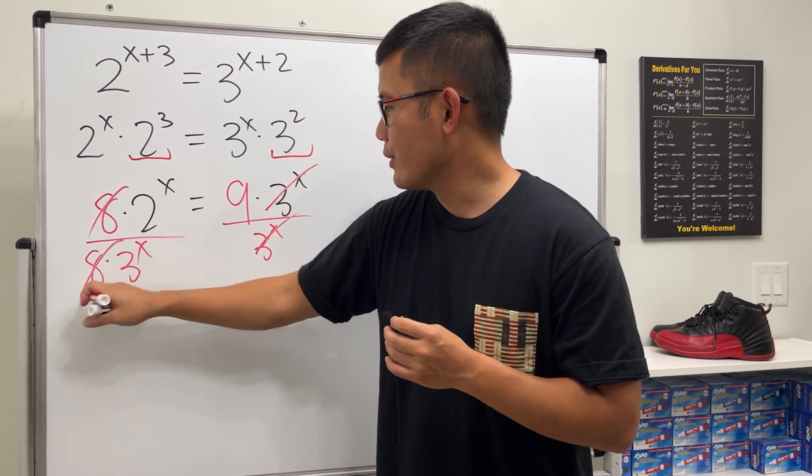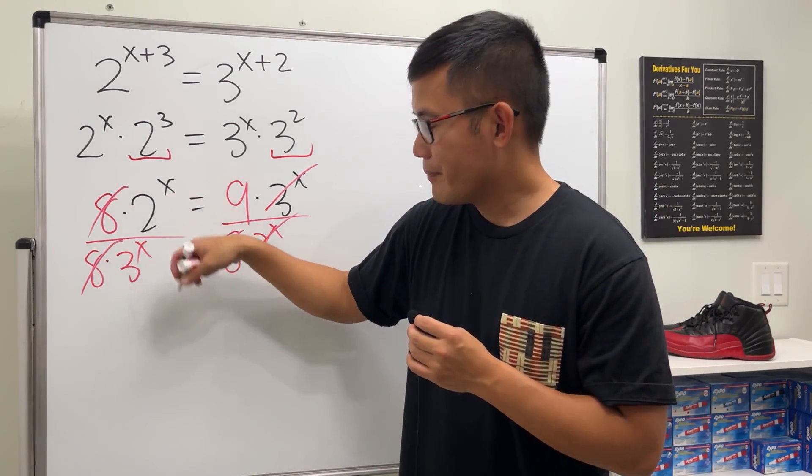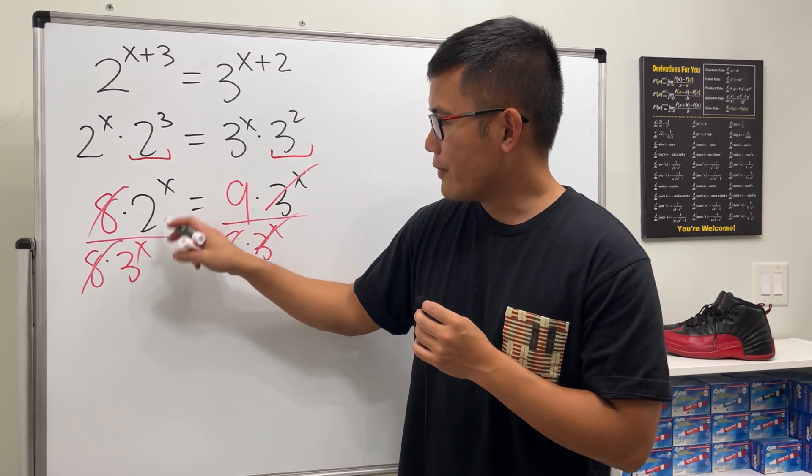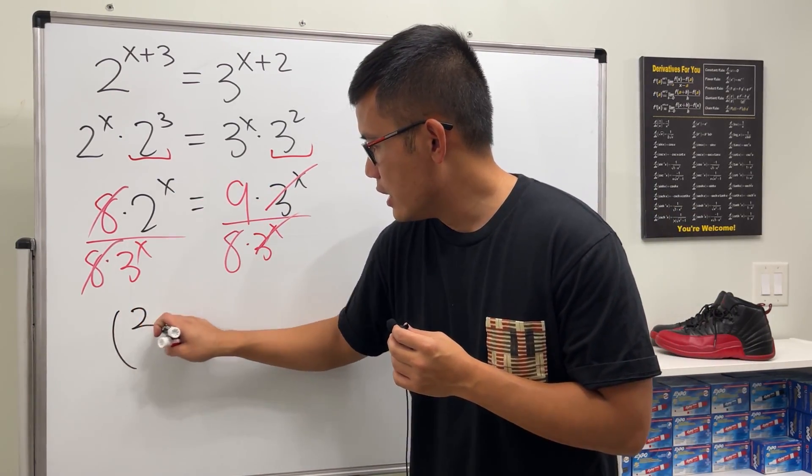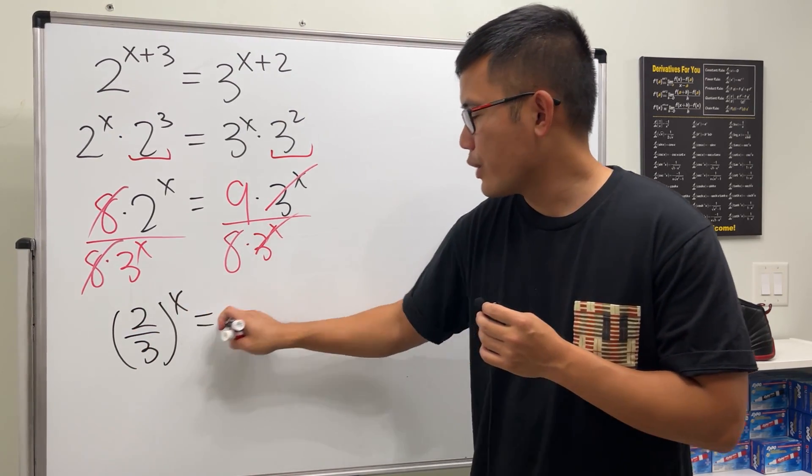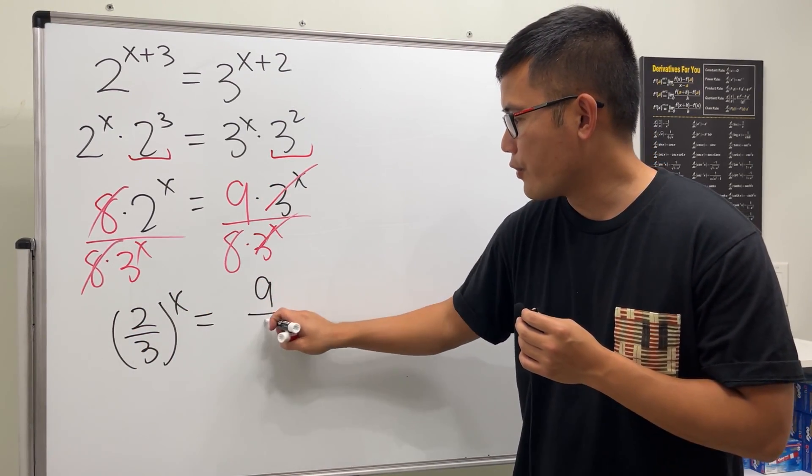So here notice that both of them have x in their power so we are going to just go ahead and write this as 2 over 3 to the x power and the right hand side we have the 9 over 8.